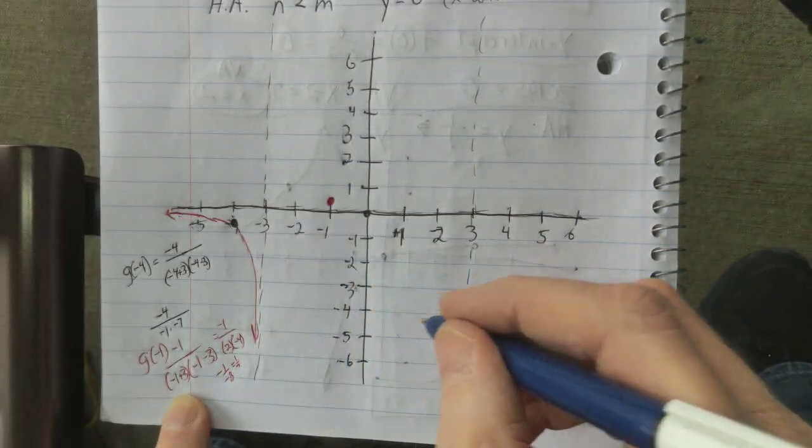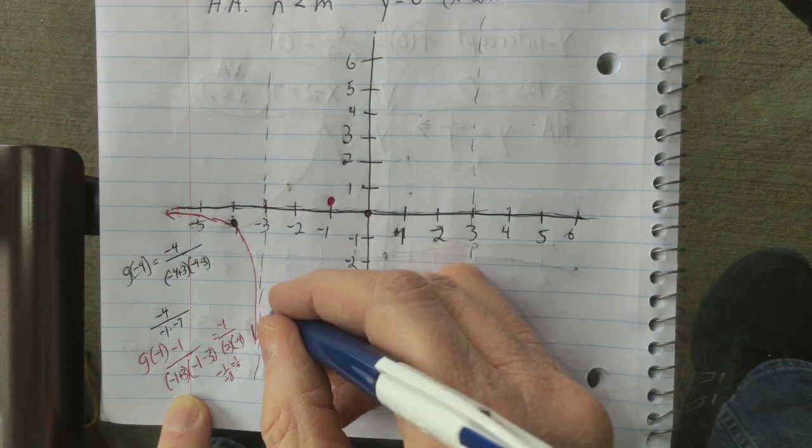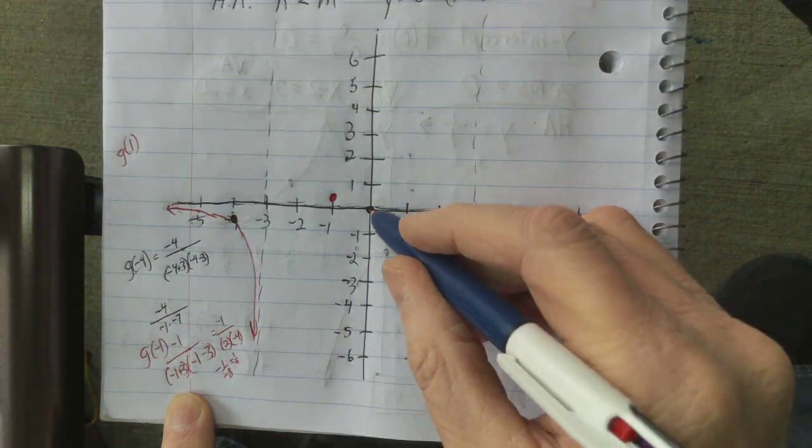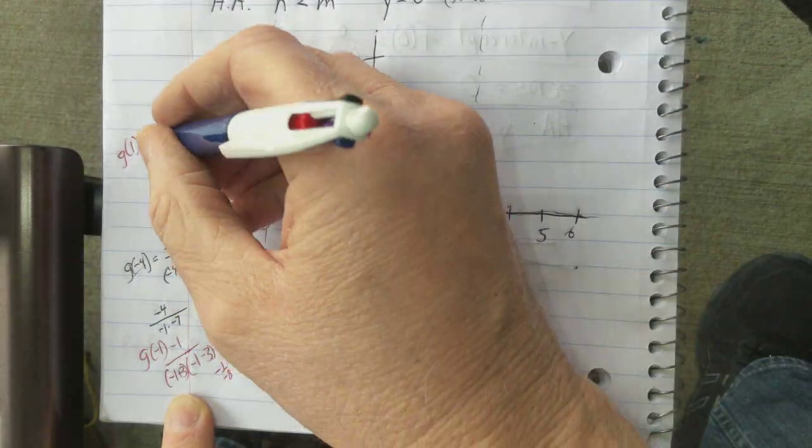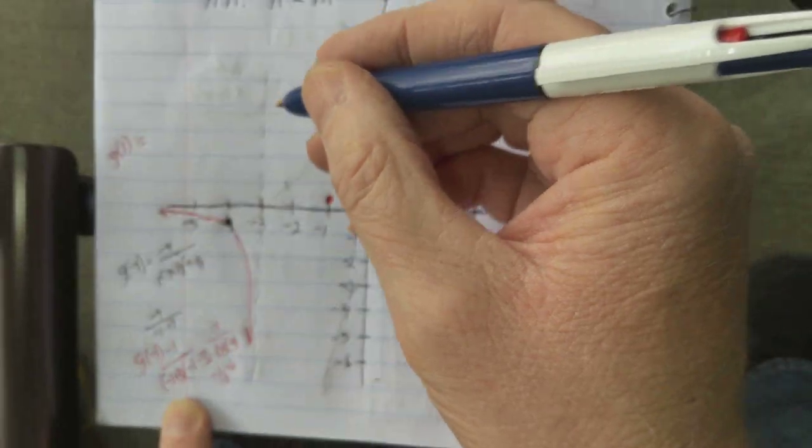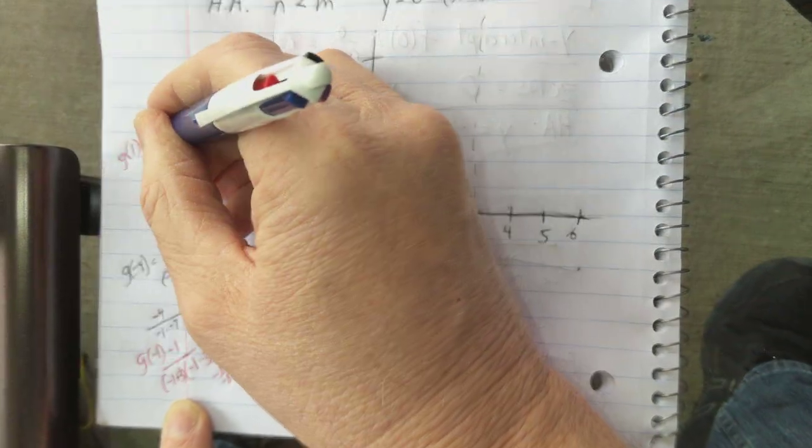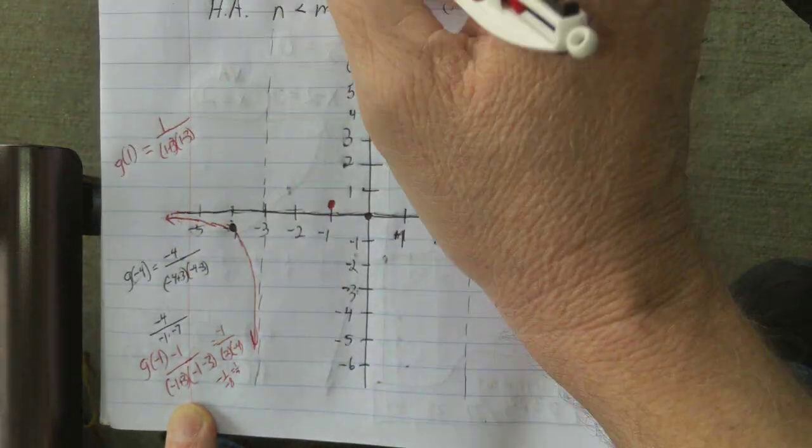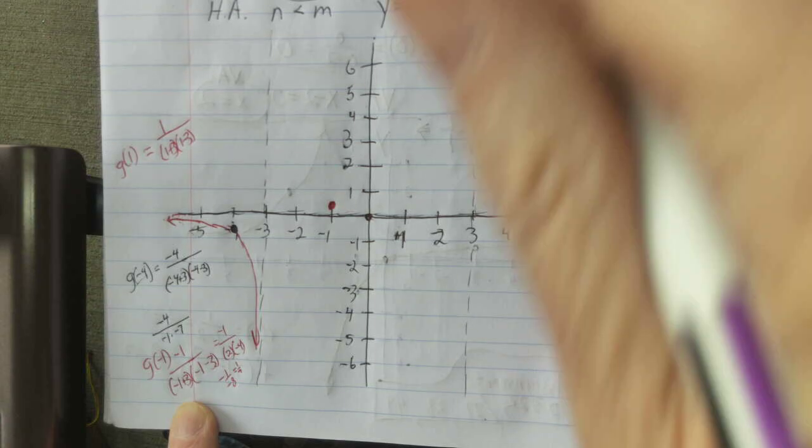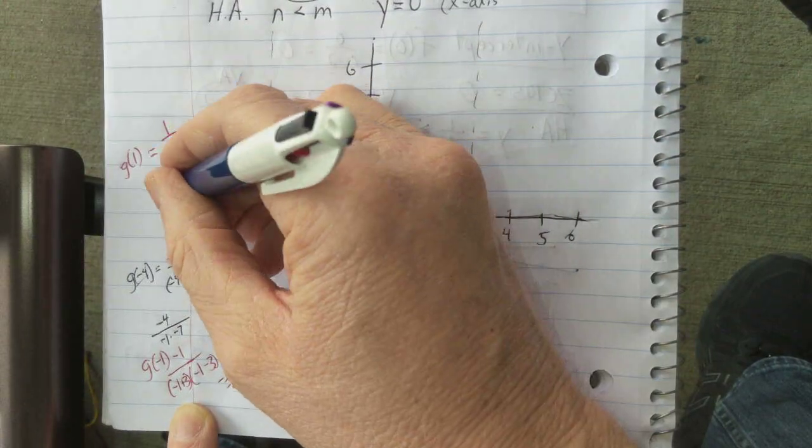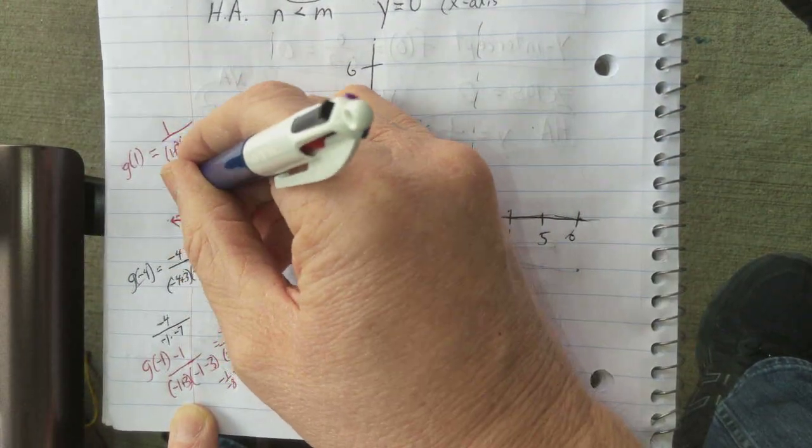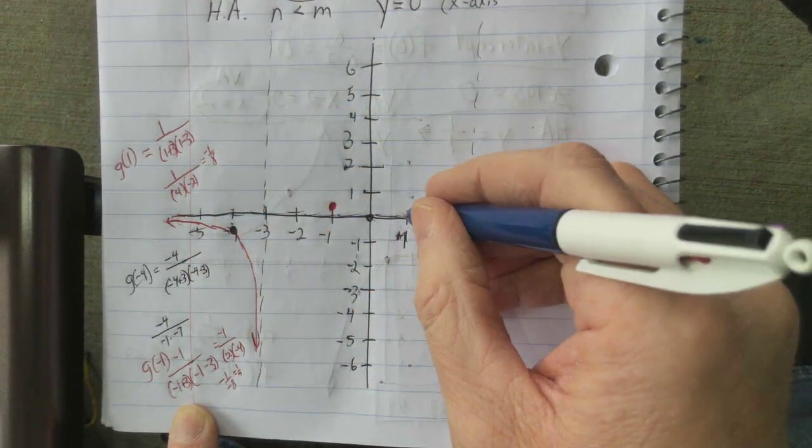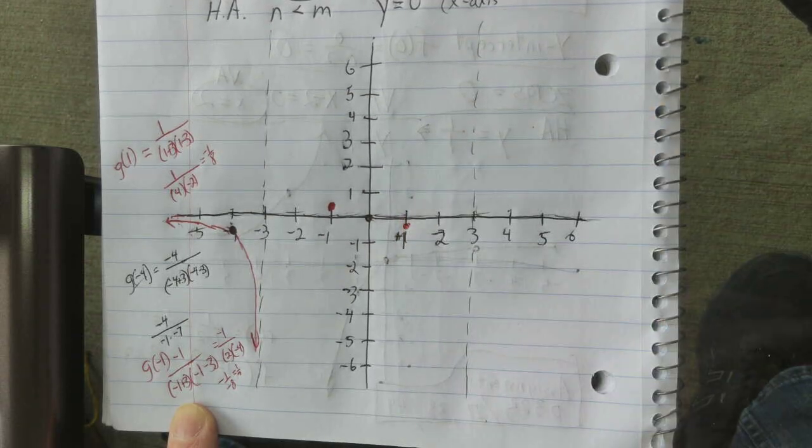And then, at 1, g of 1. I'm kind of making a mess here. I'm going to come up here and figure out what g of 1 is. And that's just between this 0 and this 3. g of 1 is 1 over 1 plus 3 times 1 minus 3. You might be wondering it might have been easier just to leave it as x squared. Which, I hope we get the same thing. But 4 and negative 2. That's negative 1 eighth. So the point 1 negative 1 eighth is right here.